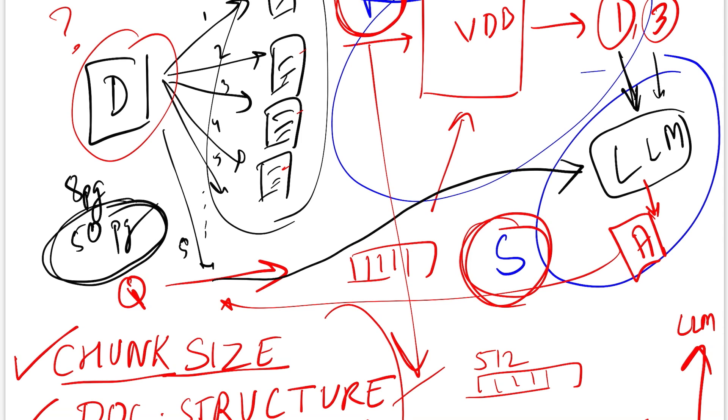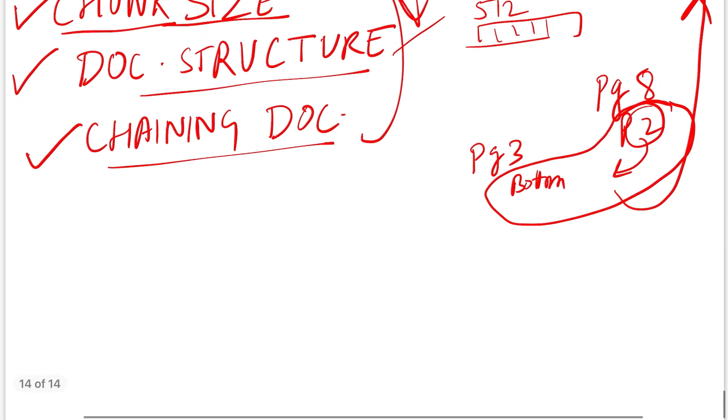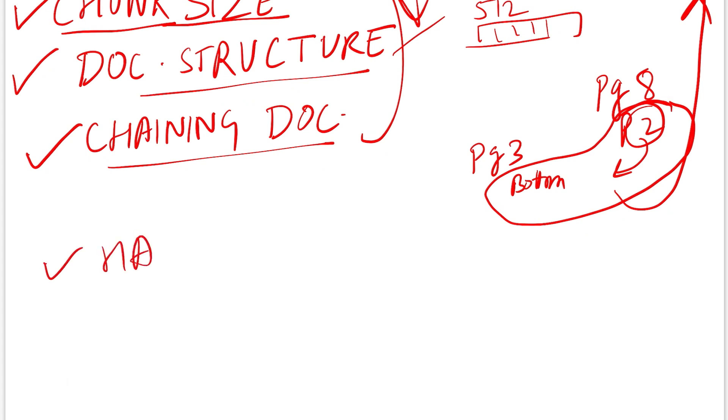Now moving on to the synthesis, where once you have received a relevant chunk, what can go wrong in terms of you're not able to answer it through the LLM? As I said, LLMs can hallucinate. What does that mean? It's trying to generate something that's not there in your input document.